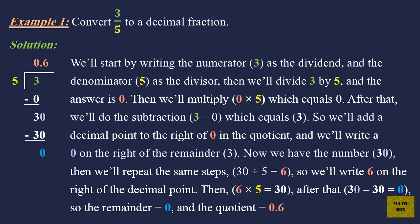Then we'll repeat the same steps. 30 divided by 5 equals 6. So we'll write 6 on the right of the decimal point. Then, 6 times 5 equals 30.